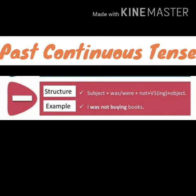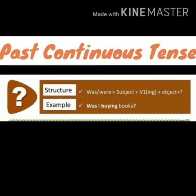For a negative sentence in past continuous tense: Subject + was/were + not + verb -ing form + object + full stop. Example: 'I was not buying books.' For an interrogative sentence: helping verb (was/were) comes at the start, then subject, then verb -ing form, then object, then question mark.